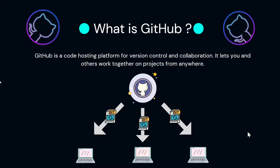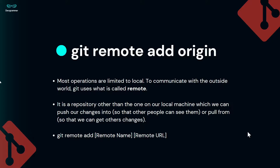Before pushing our code to GitHub, we have to do some simple steps. One of them is adding a remote. We are working with Git commands locally on our machine, but to communicate with the outside world we use remote — specifically to communicate with the GitHub repo where we want to push our code. A remote is a repo other than the one on your local machine, where we can push our changes so people can see them and pull them to their own local machines. The syntax for git remote add is: git remote add, then the remote name (which is 'origin' in this case), then the remote URL.